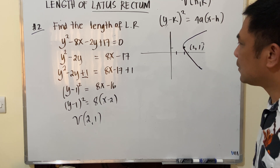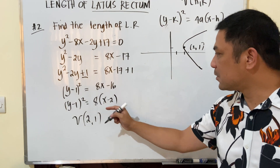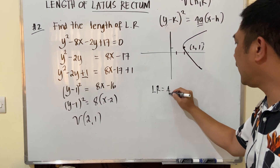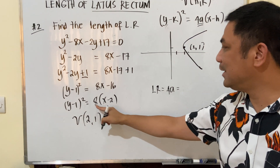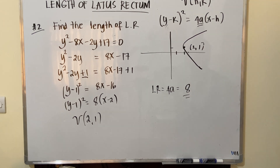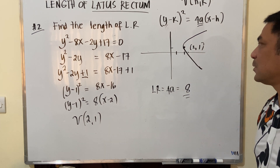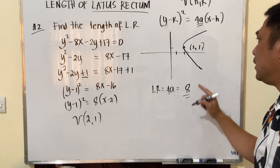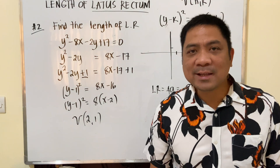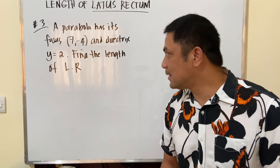We are asked to find the length of the latus rectum. From (y − 1)² = 8(x − 2), we have 4a = 8, so the latus rectum = 8. We also identified the vertex at (2, 1).